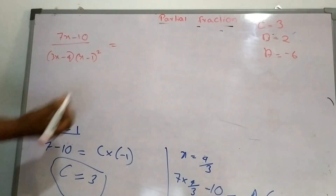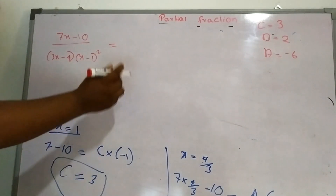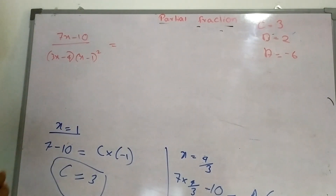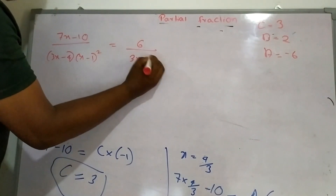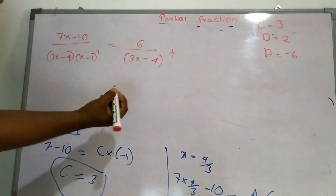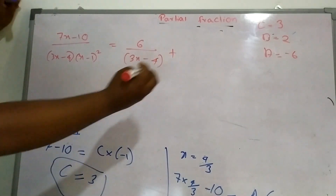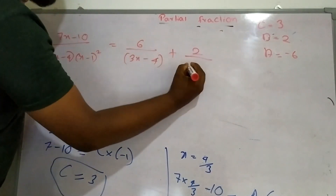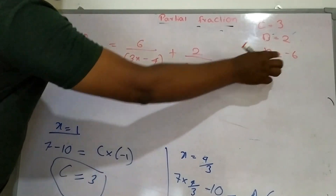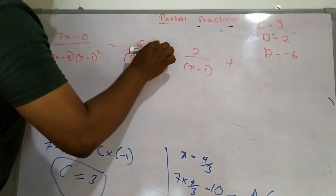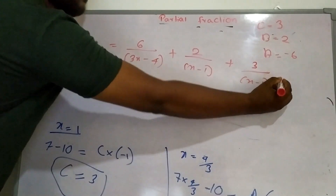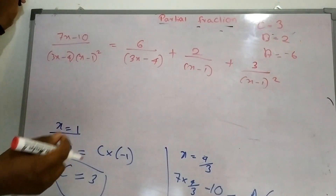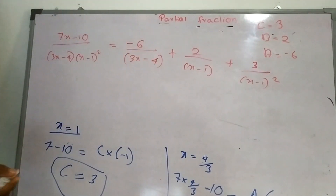So the final answer is: 3 over (x minus 1) plus something over (x minus 1) squared, but over here it is negative. This completes the second tier.